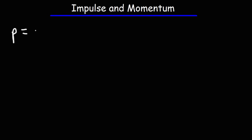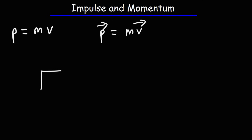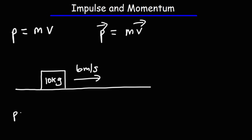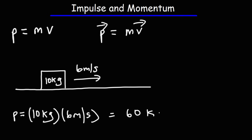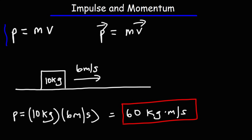The first formula you need to be familiar with is this: momentum is mass times velocity. As a vector, momentum is a vector — mass is scalar, but velocity is a vector. For example, if you have a 10-kilogram block moving at 6 meters per second, the momentum is 10 kilograms times 6 meters per second, which equals 60 kilogram·meters per second. That's how you calculate momentum — it's simply mass times velocity. Think of it as mass in motion. This is the first equation you want to know for your test.